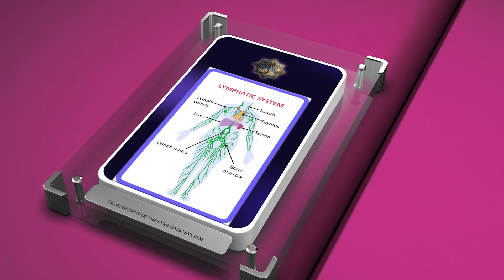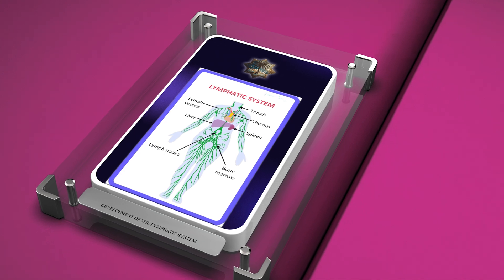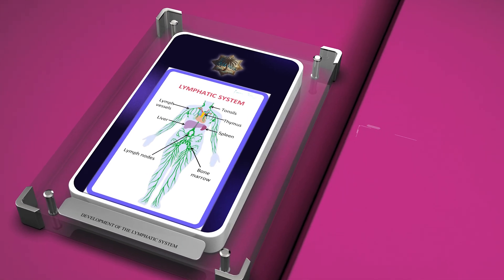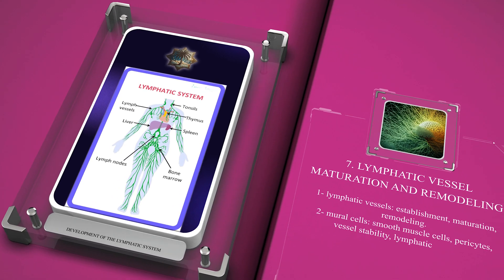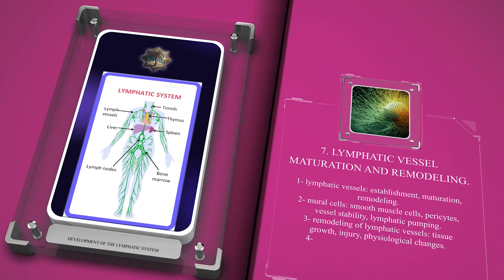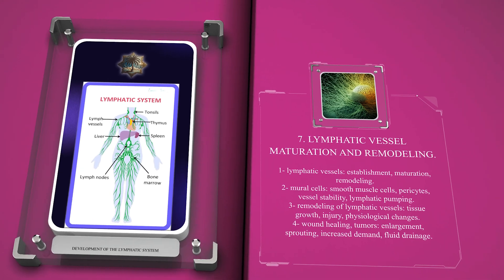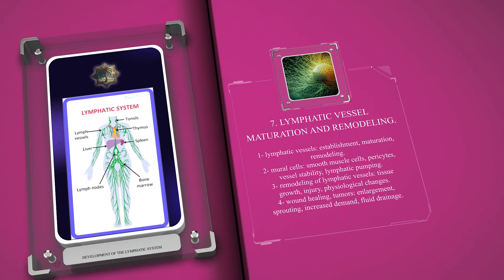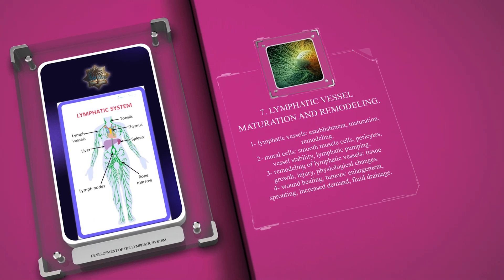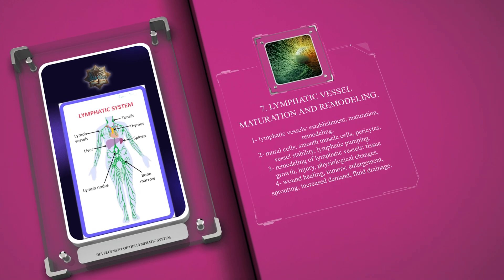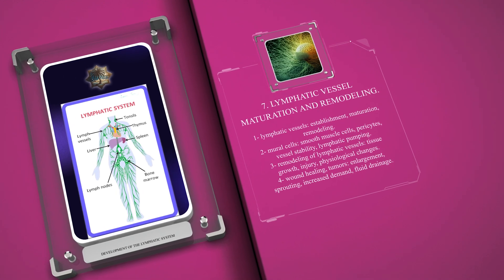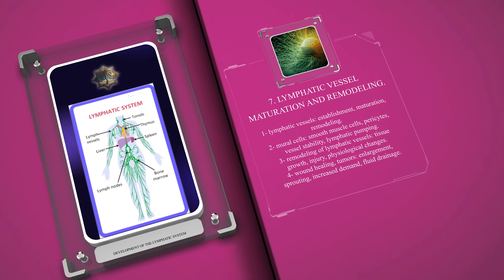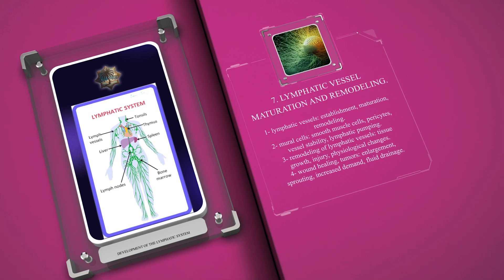After the initial establishment of lymphatic vessels, subsequent maturation and remodeling processes occur to ensure their functionality. The maturation process involves the recruitment of mural cells, including smooth muscle cells and pericytes, to lymphatic vessels. These mural cells play a crucial role in vessel stability and lymphatic pumping.